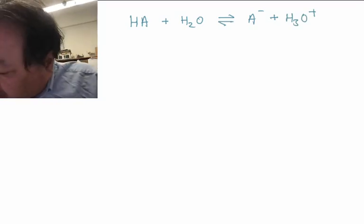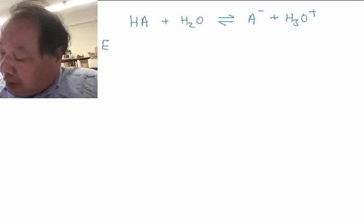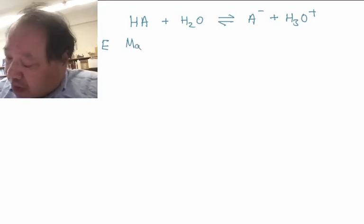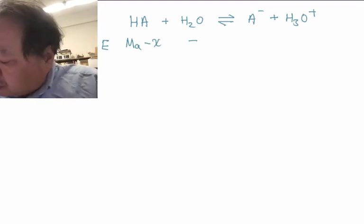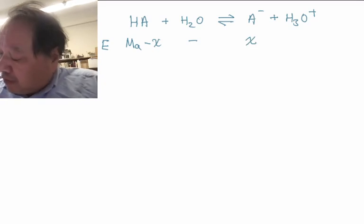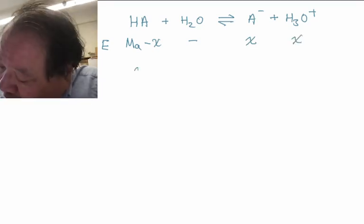I'll only give you the last line of the ice table, the E line or the equilibrium line, where the HA concentration is the initial acid concentration minus the amount reacted, and the amount of dissociated acid is X and the amount of H3O plus is X.